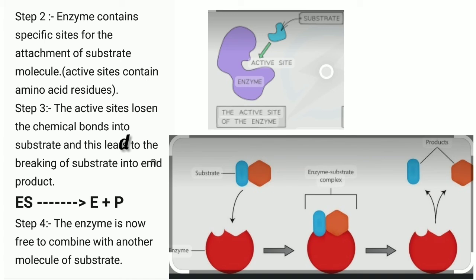Yaha two hypotheses propose kiye gaye, mechanism of formation of enzyme ke liye. Pahli lock and key hypothesis hai aur dousari induced fit hypothesis hai.